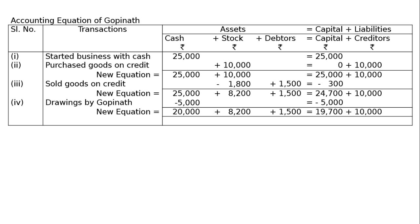The final equation is: cash rupees 20,000 plus stock rupees 8,200 plus debtors rupees 1,500 equals capital rupees 19,700 plus creditors rupees 10,000. This is your final answer.